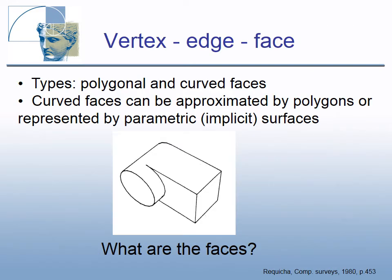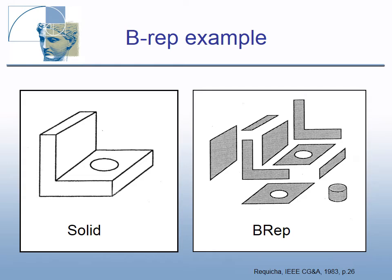There exist polygonal and curved faces in BREP. Curved faces can be approximated by polygons or represented by parametric or implicit surfaces. The notion of the face is unfortunately not well defined in the case of curved surfaces. For example, the solid object shown has a boundary representation consisting of nine faces: two of them have holes, and one has a curved surface. Even from this simple example, it is clear that it is not easy to build a BREP model manually.